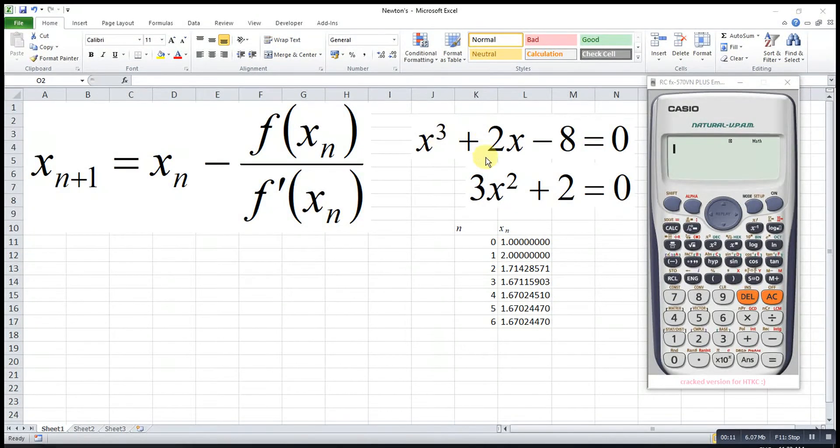So the derivative of this function will be this. And according to Newton-Raphson, the preceding approximation is actually a function of the previous approximation.